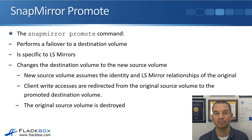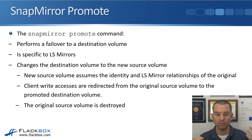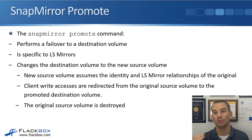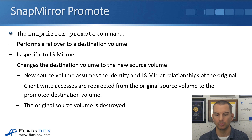The new source volume assumes the identity and load-sharing mirror relationships of the original. Client write accesses are redirected from the original source volume to the promoted destination volume, and the original source volume is destroyed. So because the original source volume is destroyed, if that node is still there, you're going to want to create a new load-sharing mirror destination to replace the one that was just promoted.